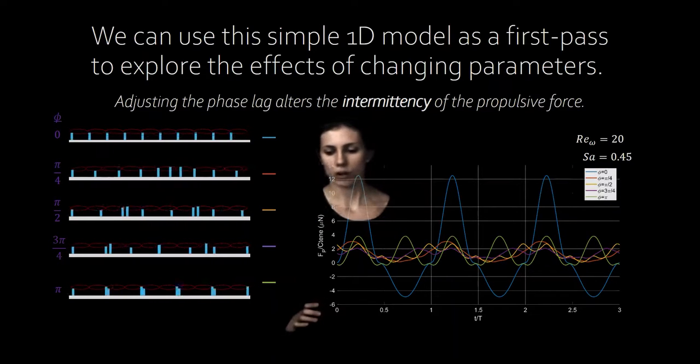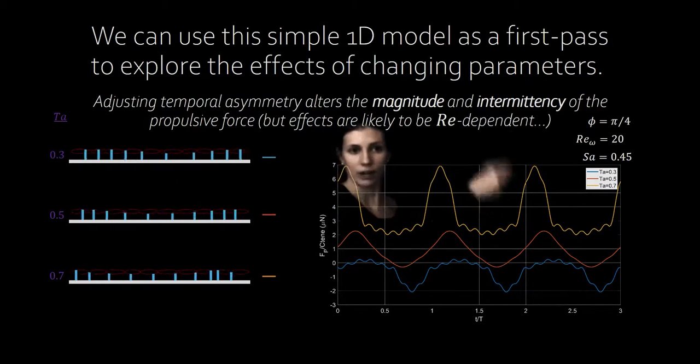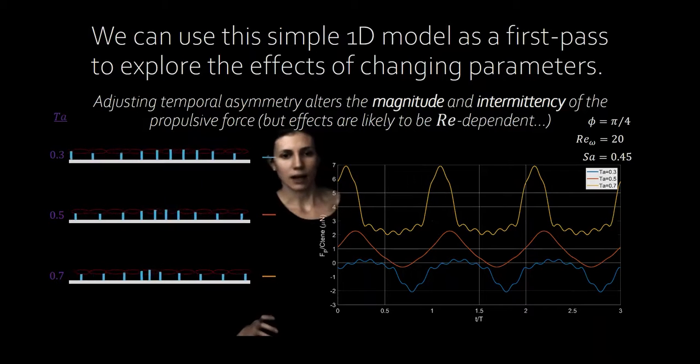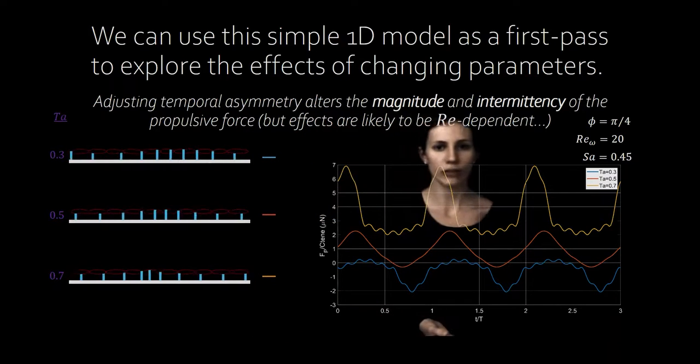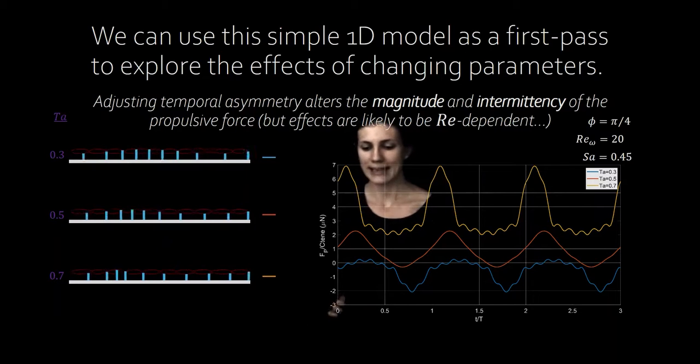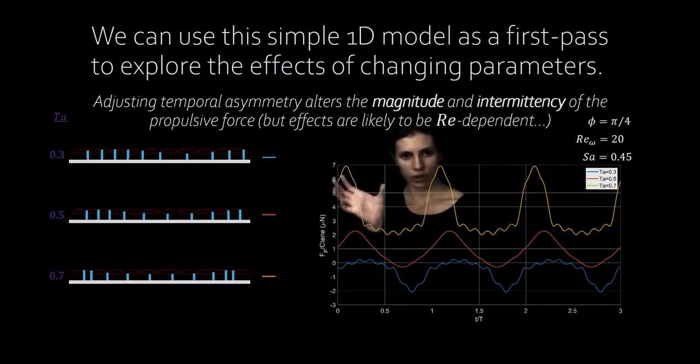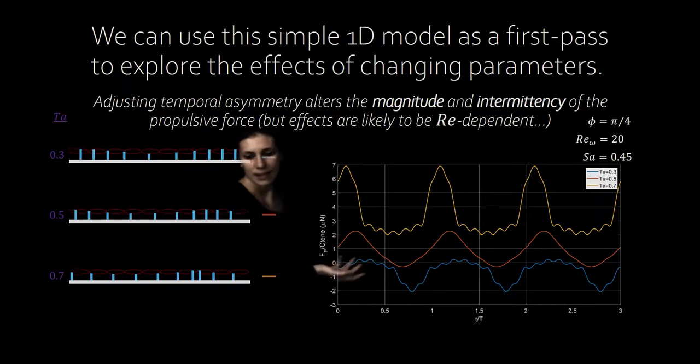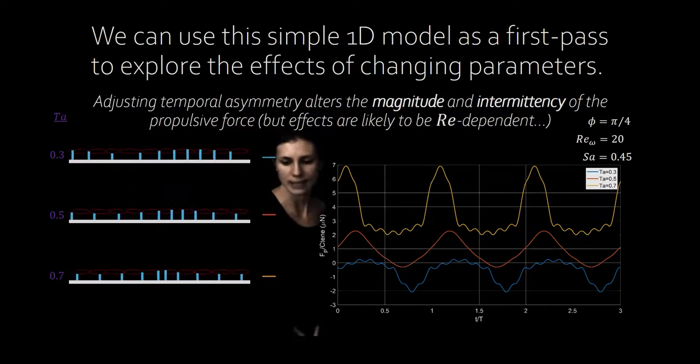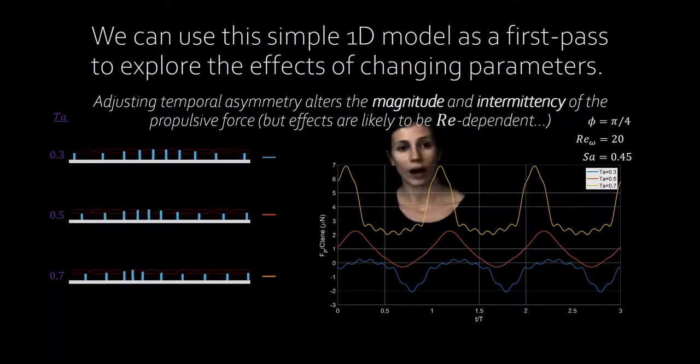So we can also manipulate our asymmetry parameters. Let's give our model a fixed Reynolds number, a fixed SA spatial asymmetry, and a fixed phase lag and see what happens when we mess with the temporal asymmetry. Here we can see that a temporal asymmetry that's less than 0.5, that is where the power stroke is slower than the recovery stroke, produces a force that's mostly negative. Increasing the temporal asymmetry increases the overall force but it also concentrates the power stroke into a narrower peak. This makes sense at the Reynolds number we're simulating here. It's above one which means that changing the speed of the power versus the recovery stroke actually is going to make a difference.